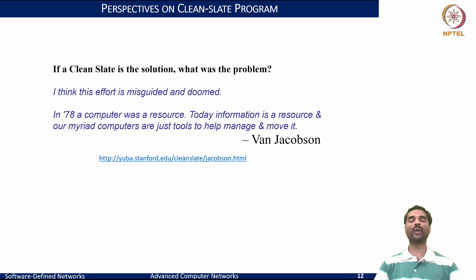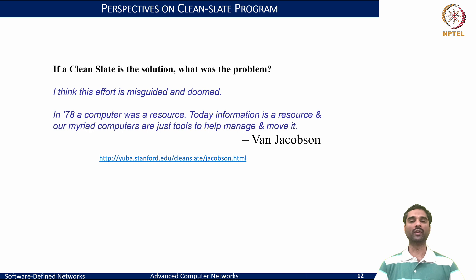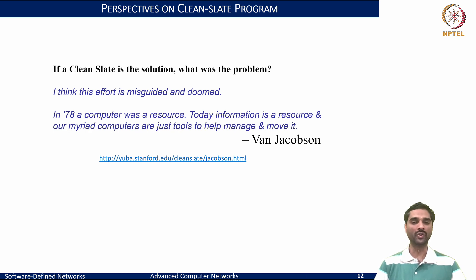An important point Van Jacobsen also raised: when networks started in the early 70s through the late 80s, computers were seen as the resource. But things changed, and starting from the early 2000s it was information that is seen as the resource, while computers and networks were just a means to ensure users can access and manage those resources. Hence we have to rethink what our key objectives are in any clean slate solution. If there is a small dent in a vehicle you would not scrap it and buy a new one — you patch it, but ensure things work in the long run.